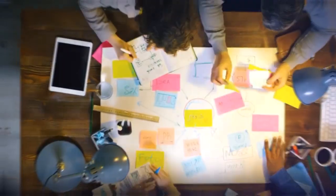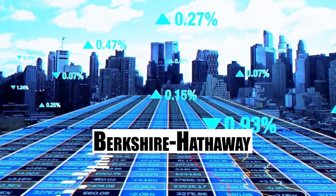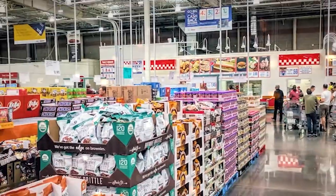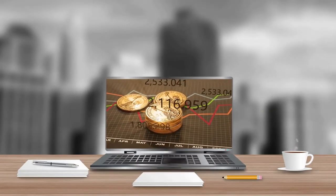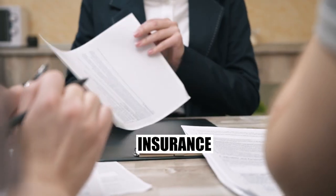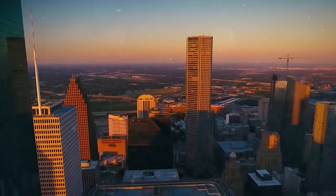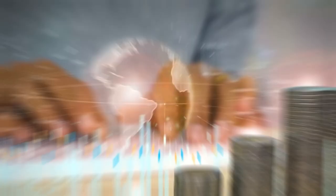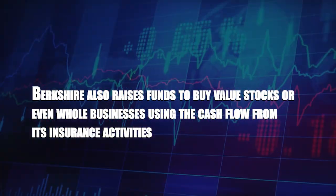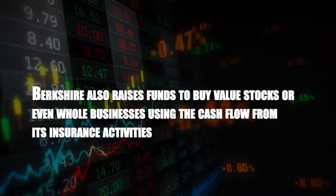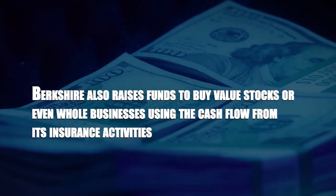The companies in Charlie Munger's portfolio are able to withstand a number of these stresses. Berkshire Hathaway has a number of companies that sell goods that customers frequently need and has some price power. The largest primary industry in Berkshire is insurance, which is recession-proof because consumers must keep their insurance regardless of general economic conditions. In times of market turbulence, Berkshire also raises funds to buy value stocks or even whole businesses using the cash flow from its insurance activities.